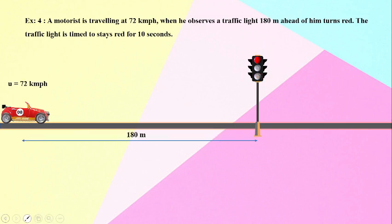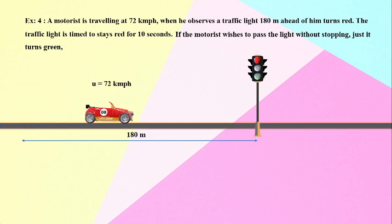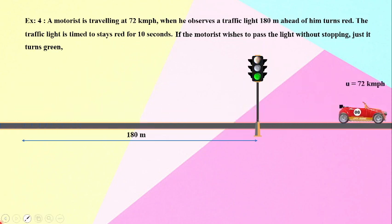Here, initial velocity is given as 72 kilometers per hour. The distance between the car and the signal post is 180 meters. He is moving in such a way that he has to pass that signal without stopping at that particular signal because it will be turning red. So he has to have the manipulation of the speed accordingly so he will be passing without any obstruction.